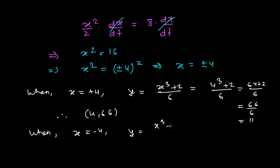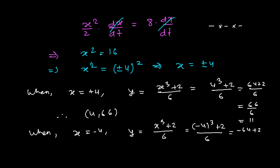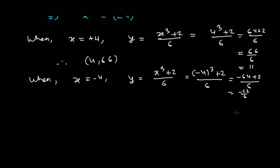When X equals minus 4, Y equals (X cubed plus 2) divided by 6, which is (minus 4 cubed plus 2) divided by 6. Minus 4 cubed is minus 64, so we get (minus 64 plus 2) divided by 6, which is minus 62 divided by 6, and simplifying gives minus 31 divided by 3. So the second point is (minus 4, minus 31/3).